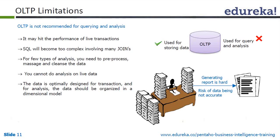SQL will become too complex because the data is normalized — in normalized data, data is segregated through relations. If you want to bring all the dimensions together on the same page, there will be a lot of joins involved, and that itself will take time, which is a performance hit.